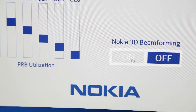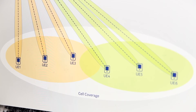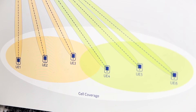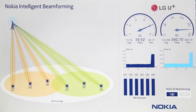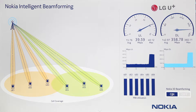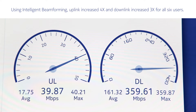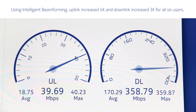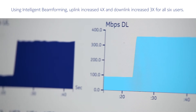I will turn on 3D beamforming software and you can see that all six users' uplink are increased by four times and downlinks are increased by three times.